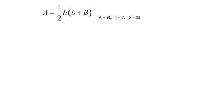This one says A equals one-half h times small b plus capital B. This is actually the formula for the area of a trapezoid.